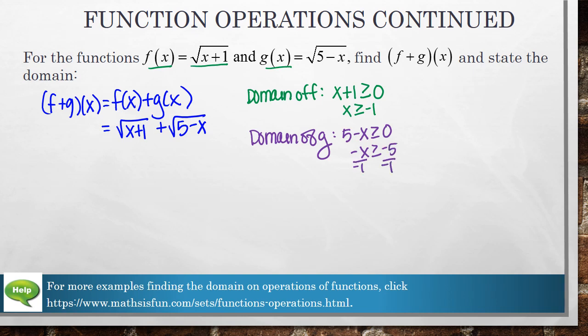Divide both sides by negative 1, which means we have to flip the inequality sign, and we get that x has to be less than or equal to 5. Now some students can look at this and see right away what the overlapping things are, but I personally think it's easier to just look at a number line.